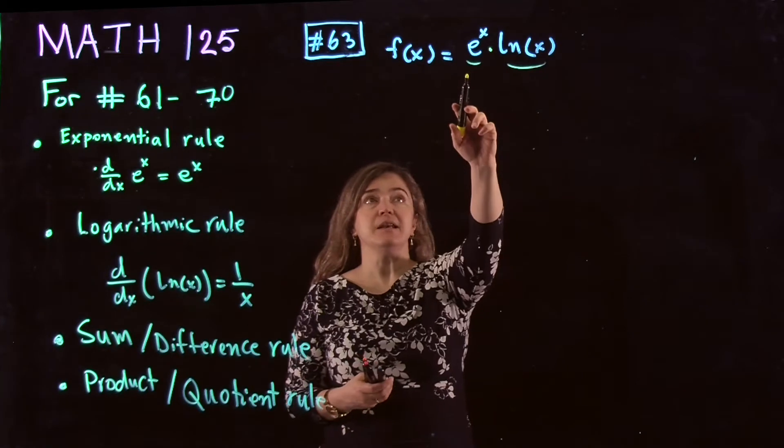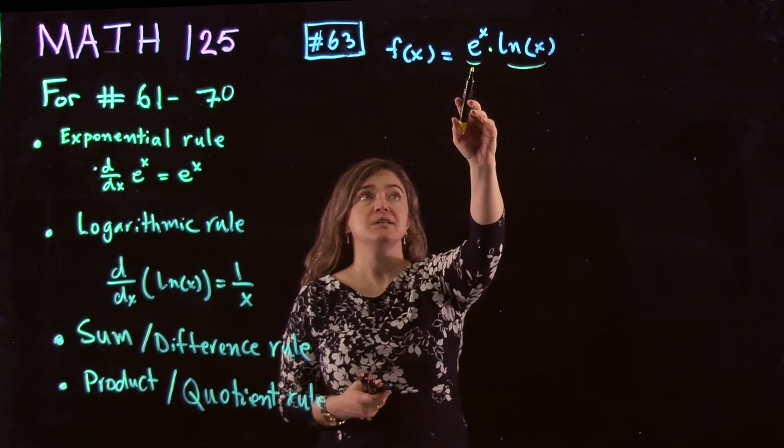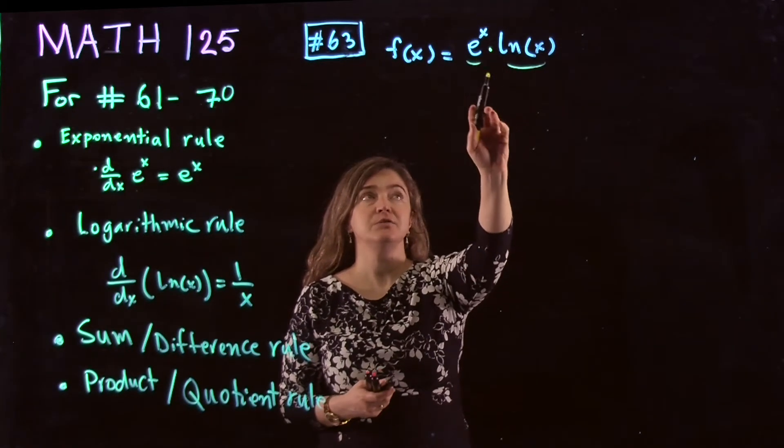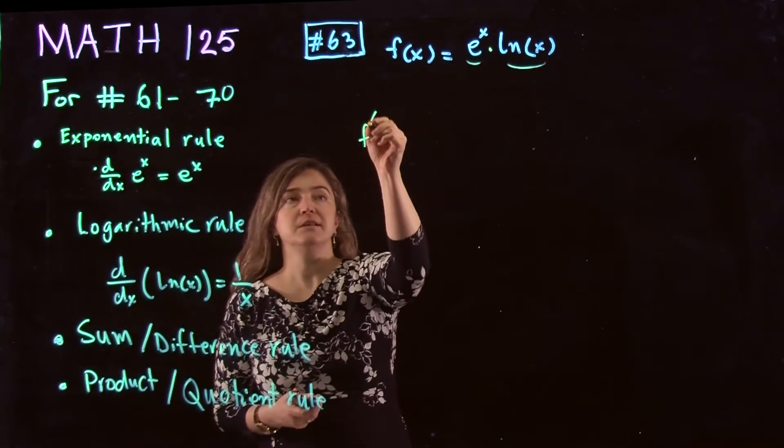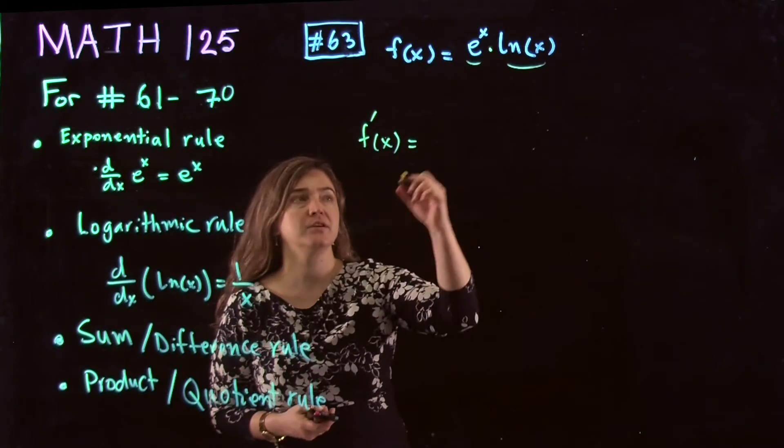So we observe that the function is product of the two functions, e to the power x and natural log of x. So taking the derivative is going to be a product rule.